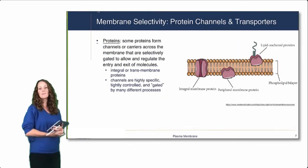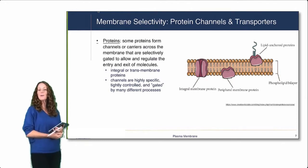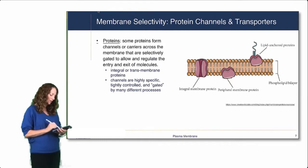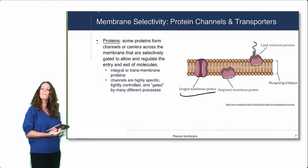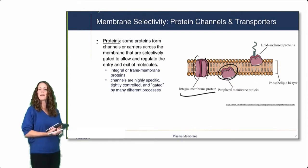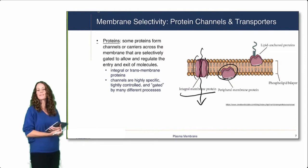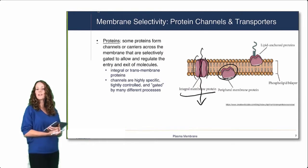Molecules that can't easily pass through the plasma membrane will require channels and transporters, which are made up of proteins. Some proteins form channels or carriers across the membrane that are selectively gated, allowing and regulating the entry and exit of molecules. We can see integral membrane proteins embedded within the membrane, and peripheral membrane proteins either inside or outside. Peripheral proteins wouldn't form channels but rather act as signaling molecules. Integral membrane proteins can form channels or transporters that are highly specific, tightly controlled, and in some cases gated by many different processes.